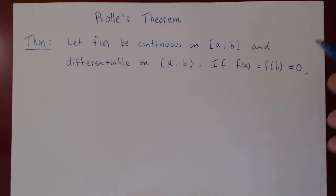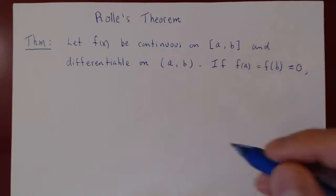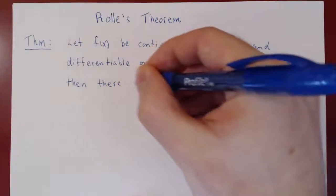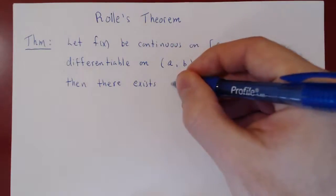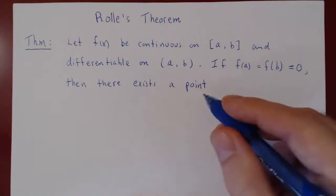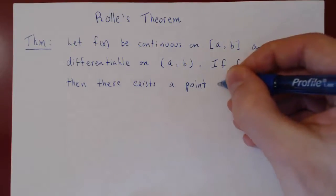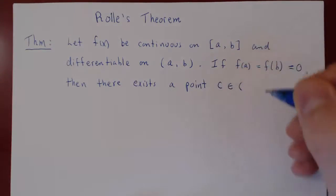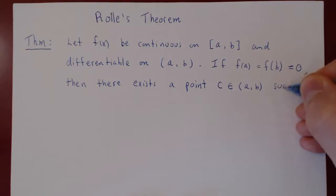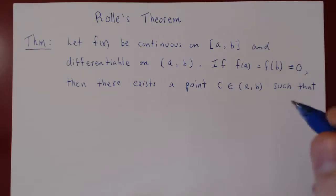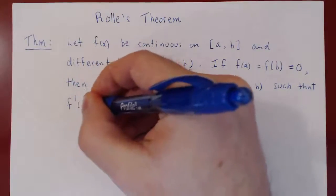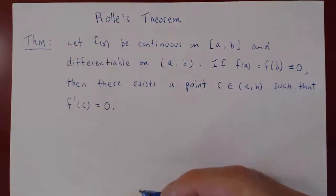As long as f of a equals f of b, the result still holds. But we'll go with the special case where both f of a and f of b are 0. So if f of a equals f of b equals 0, then there exists at least one point c in the open interval (a, b) such that the derivative of the function at this point is equal to 0 — f prime of c equals 0.